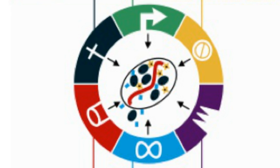In a seminal review article in 2000 entitled The Hallmarks of Cancer, Hanahan and Weinberg uniquely describe six key properties that are common to all cancers. In essence, they describe cancer cells as cells that refuse to die.